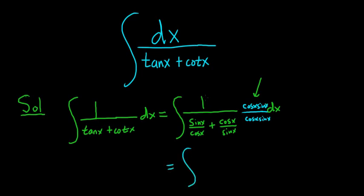And now this is where the magic is going to happen. So this is equal to the integral of, so in the numerator we simply get cosine x sine x. In the denominator we're going to distribute the cosine x sine x. So cosine x sine x times this piece here, the cosine will cancel. And so we're left with sine times sine, so sine squared. Beautiful.